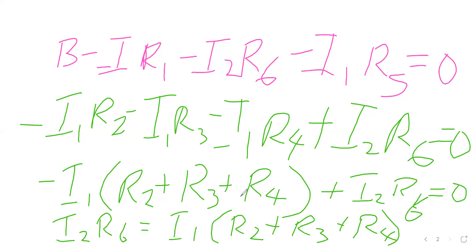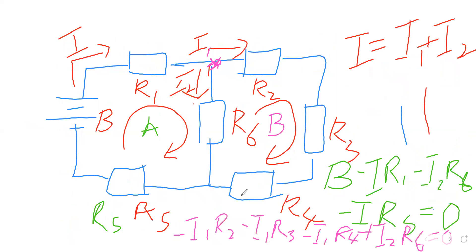This equation tells us a very interesting thing we should have noticed from first sight on the circuit, which is that resistors R2, R3, and R4 are in series. The same current flows through them,